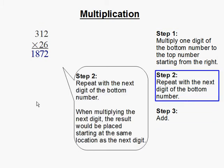Step 2: Repeat with the next digit of the bottom number. Now since we multiply the 6 already, we're going to multiply the 2.